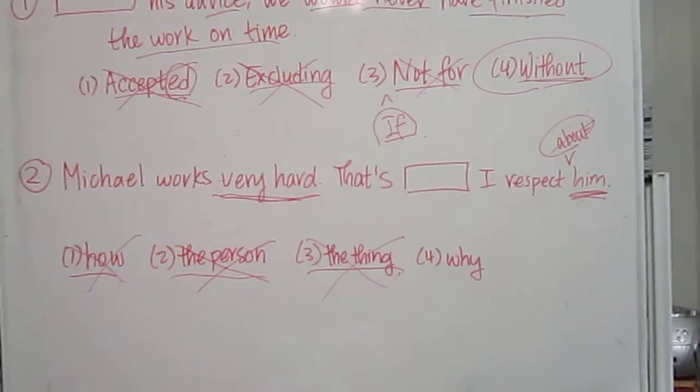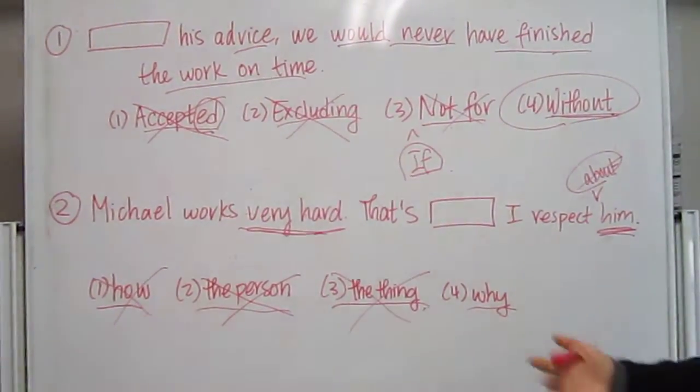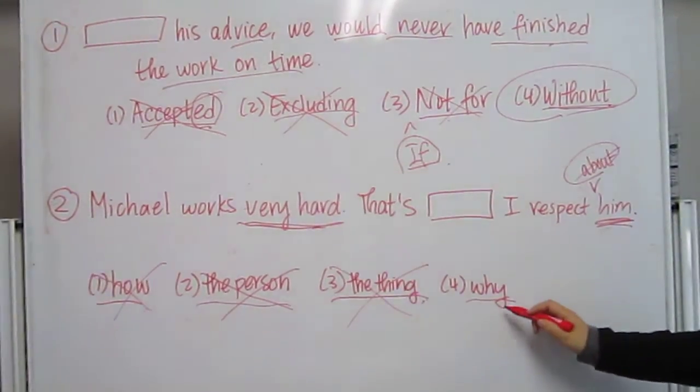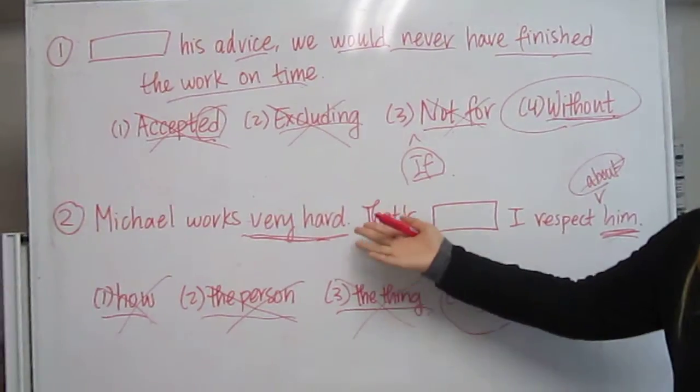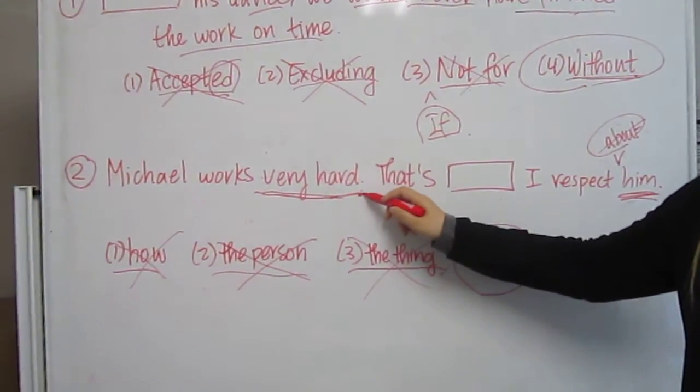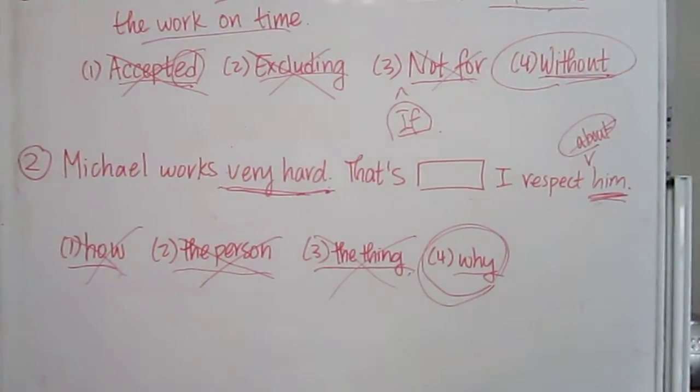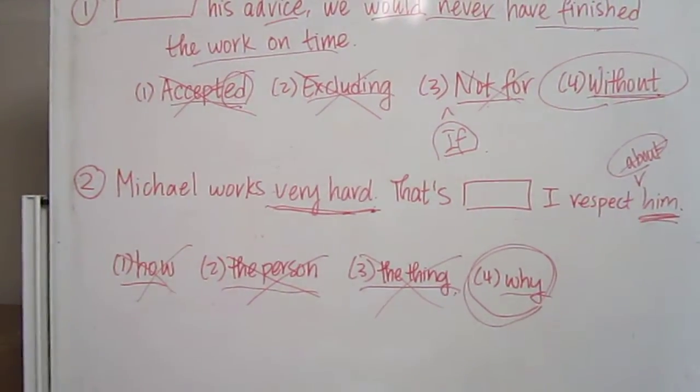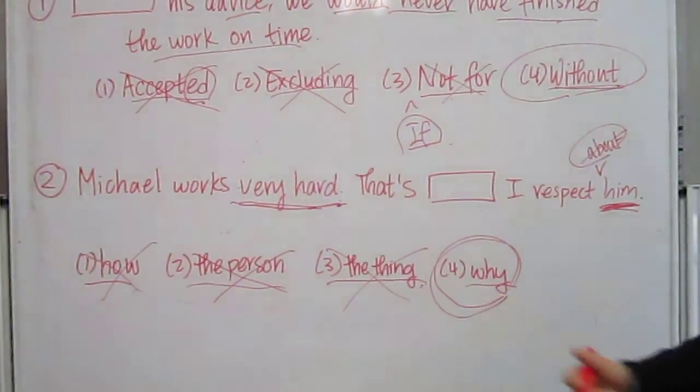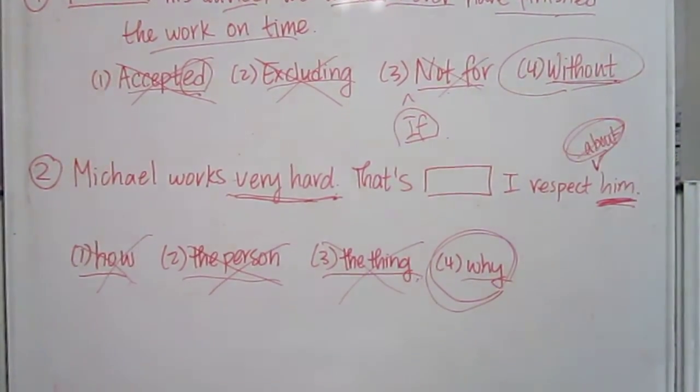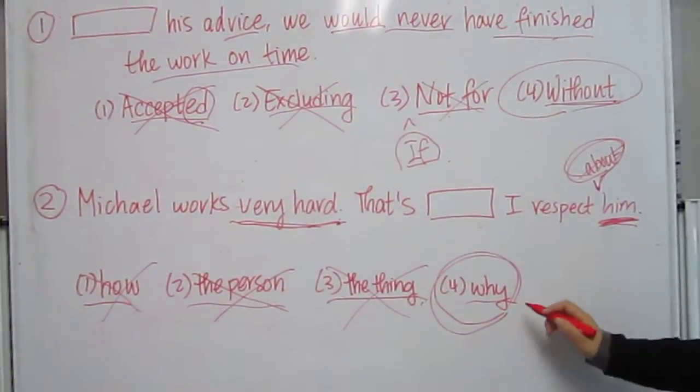The last choice is why. Michael works very hard. That's why I respect him. Why is the correct choice. Because the person says that the characteristic of Michael working very hard is the reason why he respects him. So you would have to use why. It can't be how, there's no method. It can't be the person, and we already have him in the sentence. It can't be the thing, because we need this grammatical point in there. We need this word, but they didn't have it for us. So the only word you can use correctly is why.